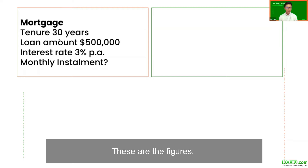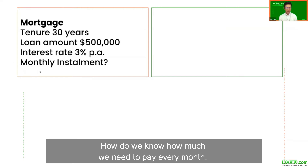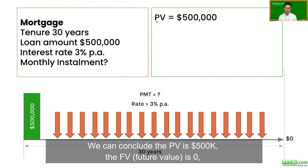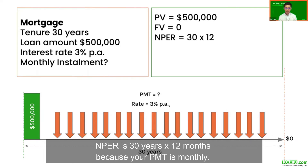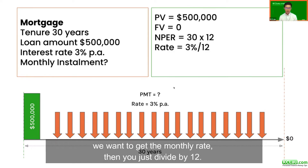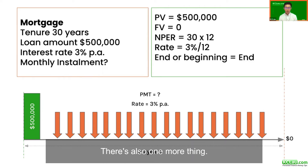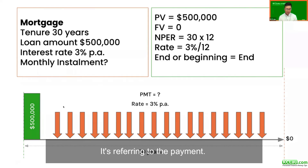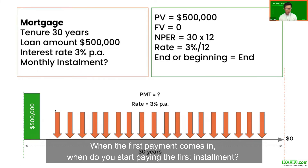First example: mortgage. How do we know how much we need to pay every month? We can identify: PV is $500,000, FV (future value) is zero, NPER is 30 years times 12 months because the payment is monthly. For the rate, you take the annual rate and divide by 12. Also, the end versus beginning setting refers to when the first payment occurs.